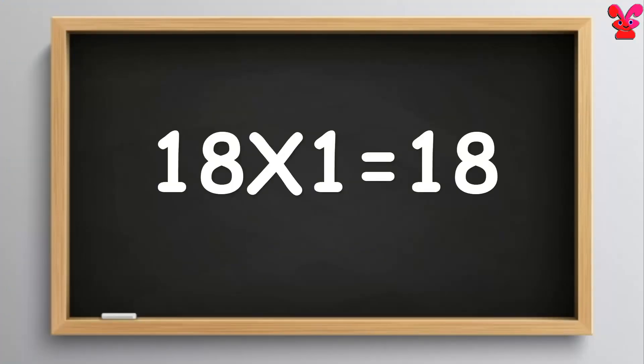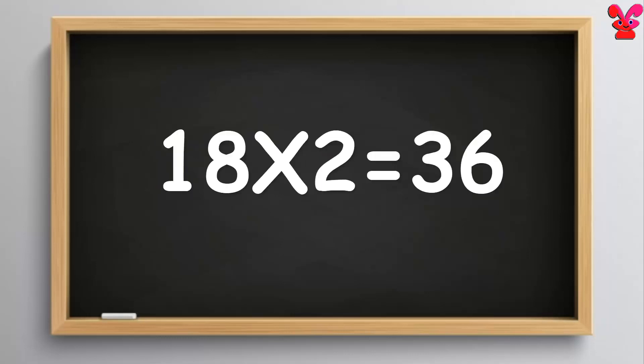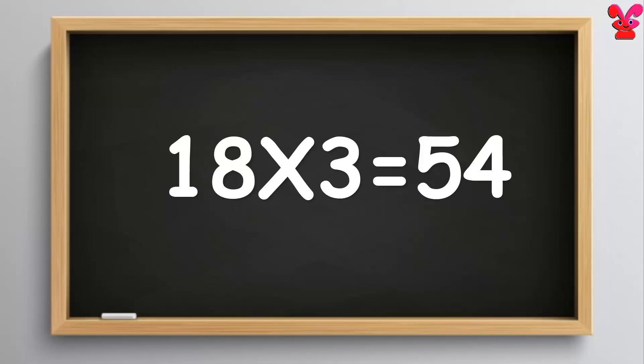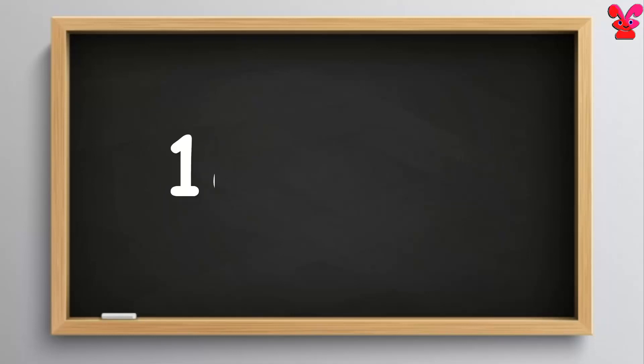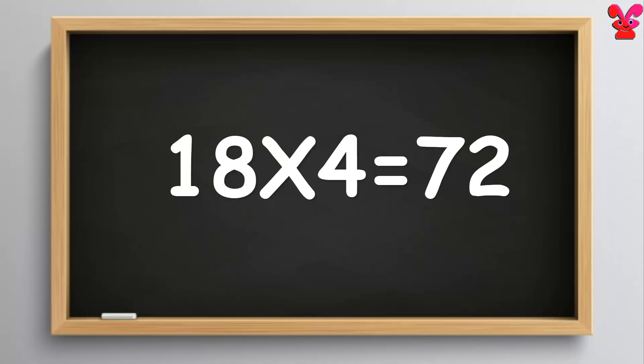18 ones are 18. 18 ones are 18. 18 twos are 36. 18 twos are 36. 18 threes are 54. 18 threes are 54. 18 fours are 72. 18 fours are 72.